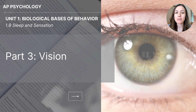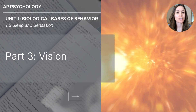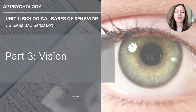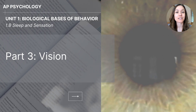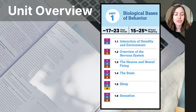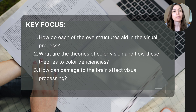Hi everyone, this video series is about sleep and sensation for AP psychology students. We're currently in unit one called biological basis of behavior. This particular video will focus on the sensation of sight and vision. As you can see in our unit overview, we are towards the end of unit one, focusing on that topic section called sensation. These are the key focus questions that will be covered in today's video. They will outline the major themes of the lesson on vision. By the end, you should be able to answer each one of them.